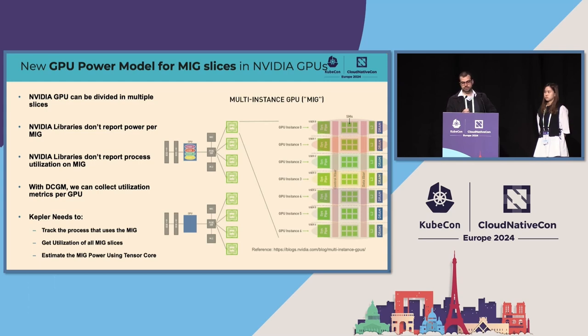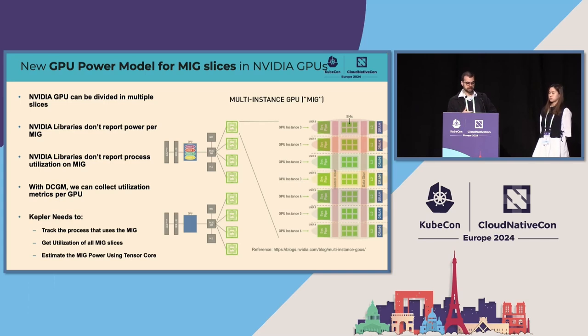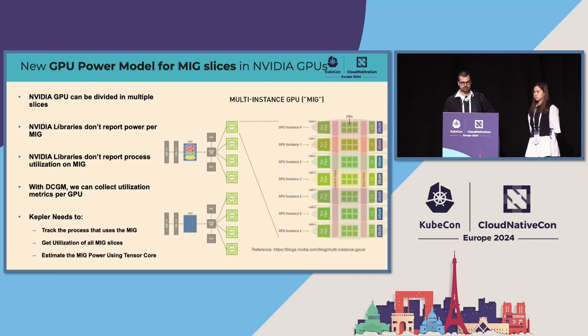The resource utilization can be defined by different components. The current implementation is a simple one that only takes into account the Tensor cores, but we are planning to extend that.